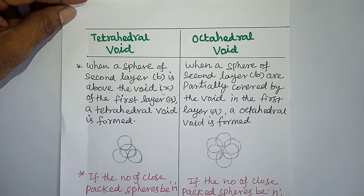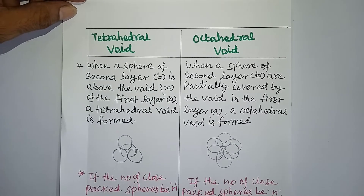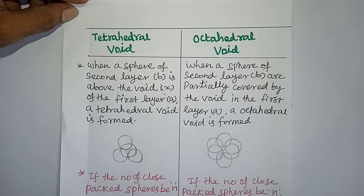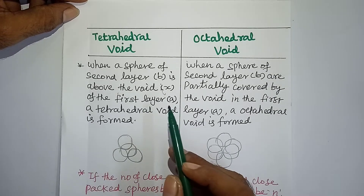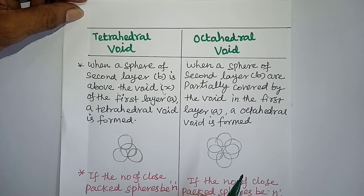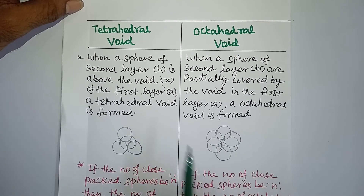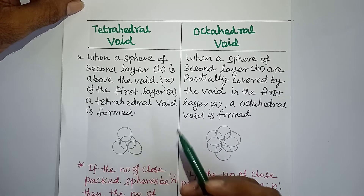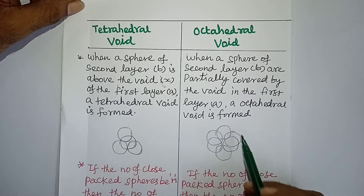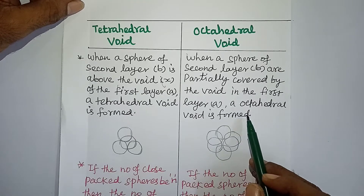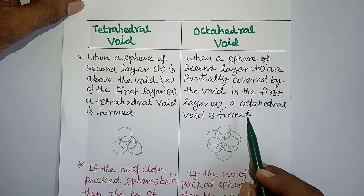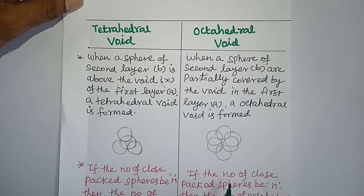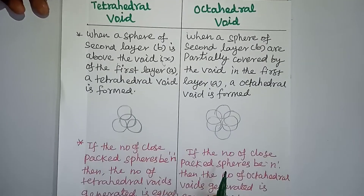What do we mean by voids? Voids are nothing but the free space between the atoms in a crystal. Tetrahedral voids means the free or vacant space between four atoms. The free or vacant space present between six atoms is called octahedral voids.